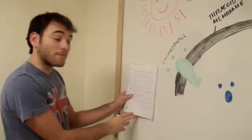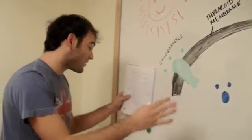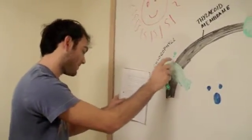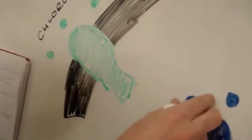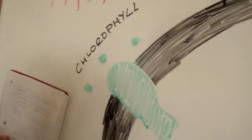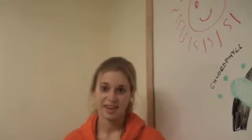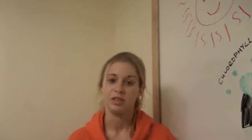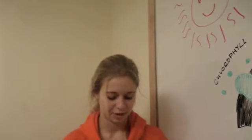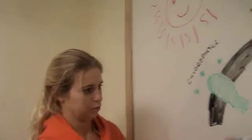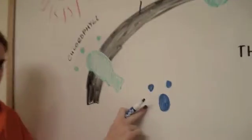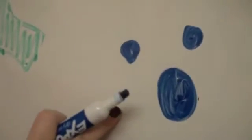Step number four. The dissociation of water is when the chlorophyll grabs the electron from a water molecule. Photolysis occurs after the water molecule breaks apart, so this water molecule right here is going to break apart.